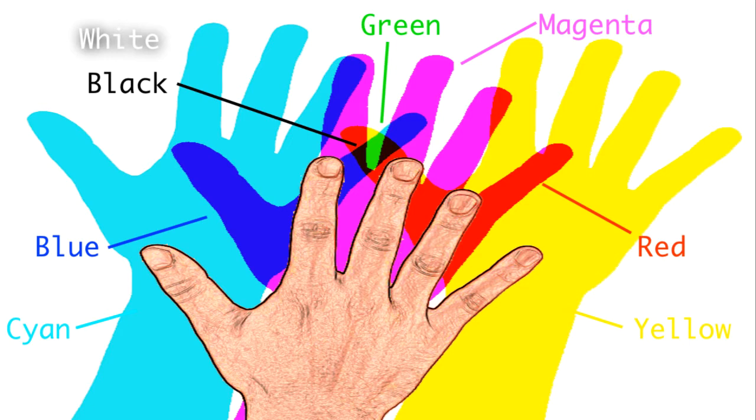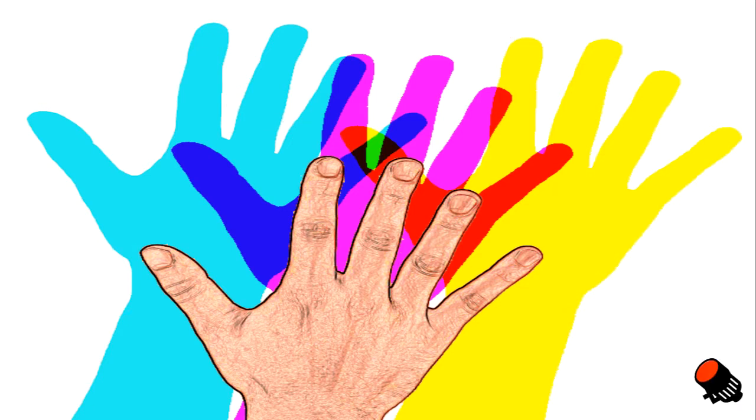Now how is this happening? Well, there are three light sources—red, green, and blue—that are shining towards me.